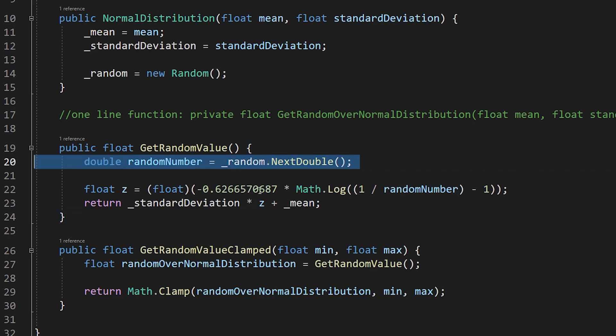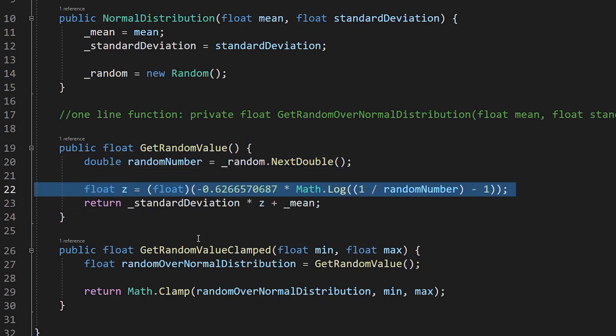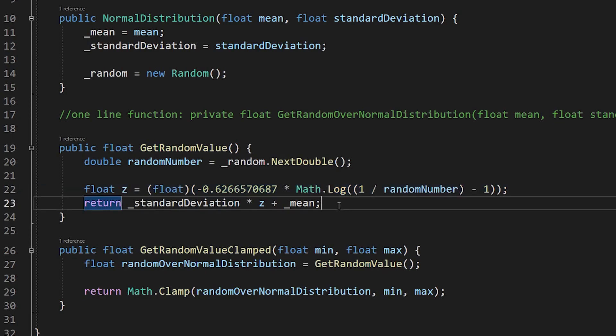In our getrandomvalue function, we start by getting a random probability, which is just a random number between 0 and 1. Next, we get our z-score by using that quantile function we found earlier. Oh, yeah, and that gross decimal is just 1 divided by k. I computed this in advance to avoid doing square root functions on the fly, because those are pretty slow.